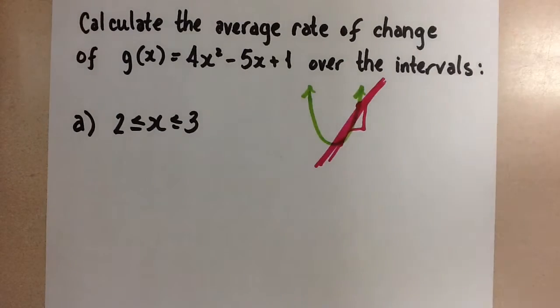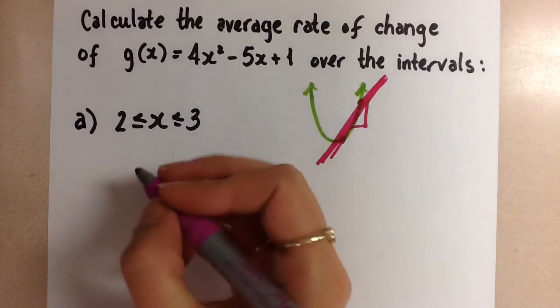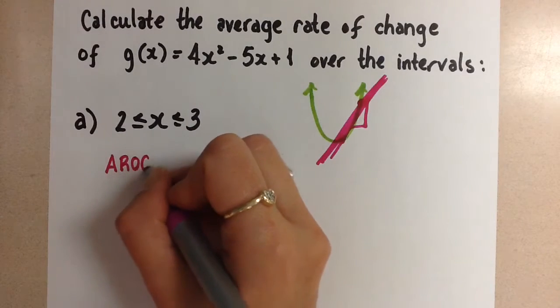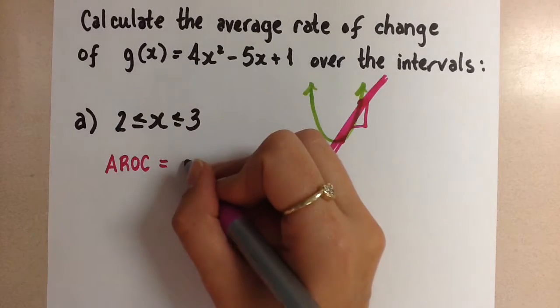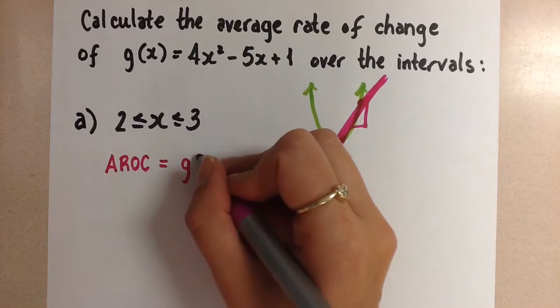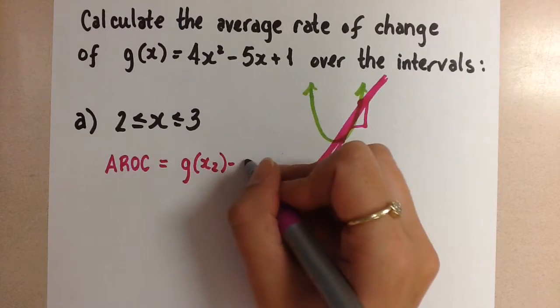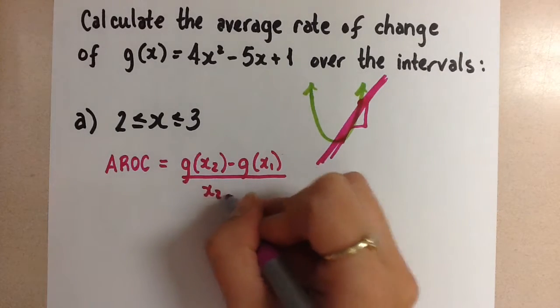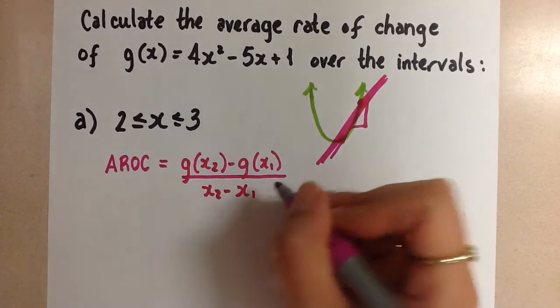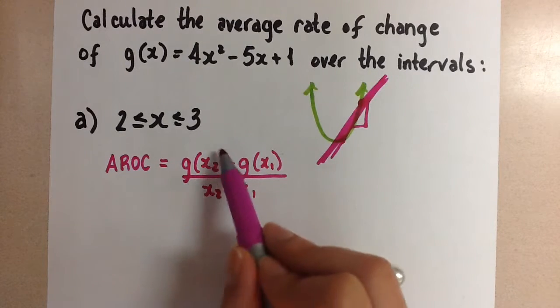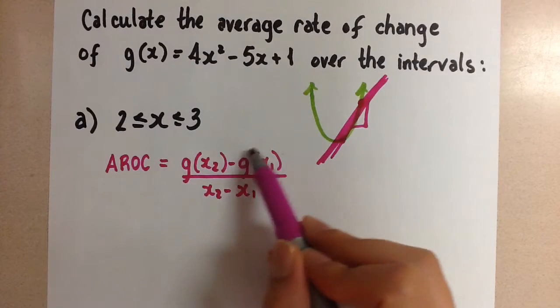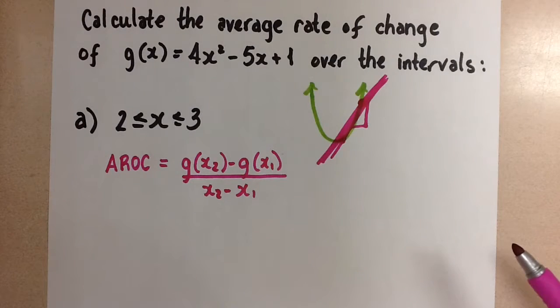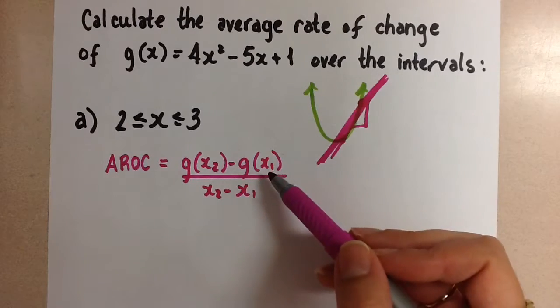We can do this by using a formula that looks very similar to the formula that we learned for the slope of a line. To find the average rate of change we use a formula that says g(x₂) minus g(x₁) over x₂ minus x₁. This looks a lot like the formula for slope. If you remember, this was y₂ and this is y₁, and then we still have x₂ minus x₁ in the denominator. We've changed it now into our function notation.